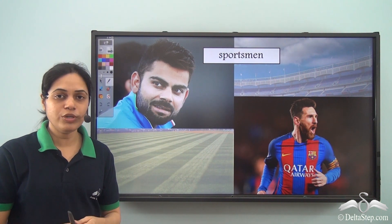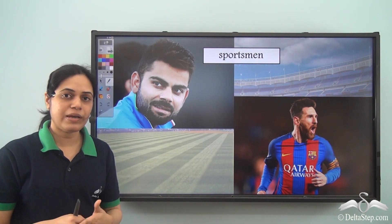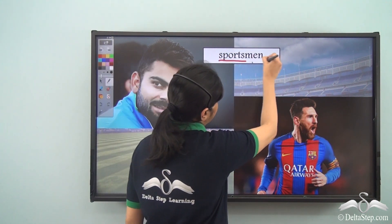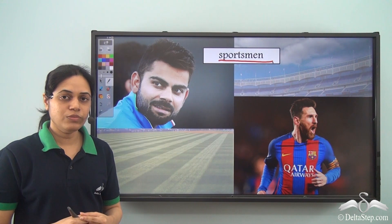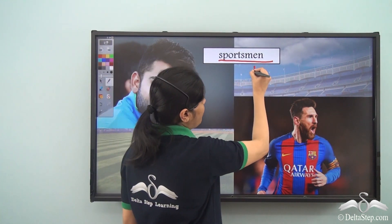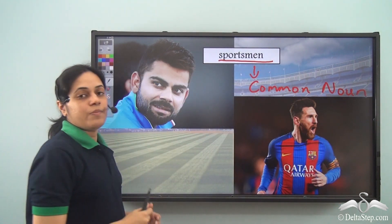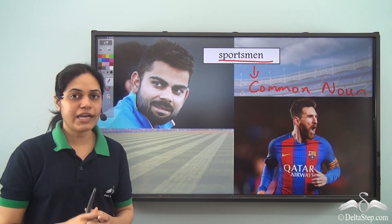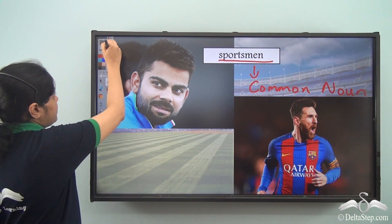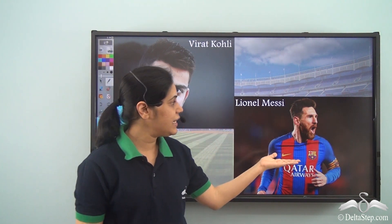So can you tell me who are these people? We see the pictures of two people on the board. Now how can we name them? If I have to give one word for both of them, what will I give? Sportsmen. They are both sportsmen, and because sportsmen is a naming word for people, it is a noun. But what kind of noun is it? It is a common noun, because it refers to all or any sportsmen in general. It does not specify which sportsmen we are talking about. But if I name them — he is Virat Kohli, the captain of the Indian cricket team, and he is Lionel Messi.